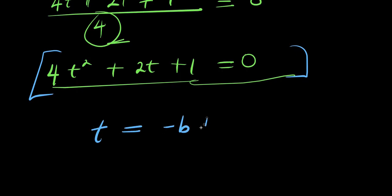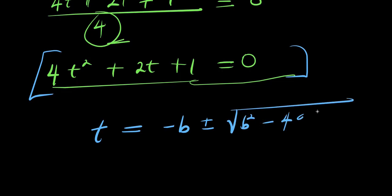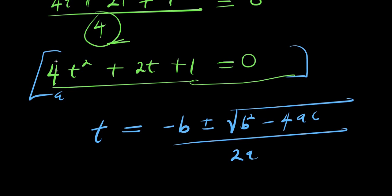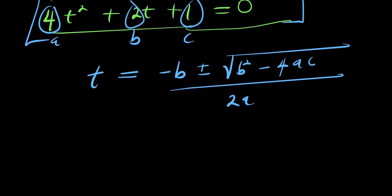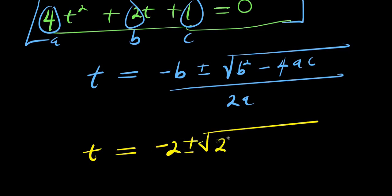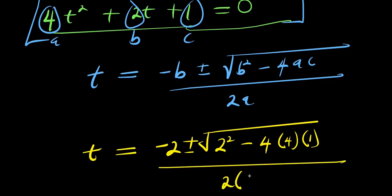We have t equals negative b plus or minus square root of b squared minus 4ac, divided by 2a. Inserting the values: t equals negative 2, plus or minus square root of 2 squared minus 4 times 4 times 1, divided by 2 times 4.